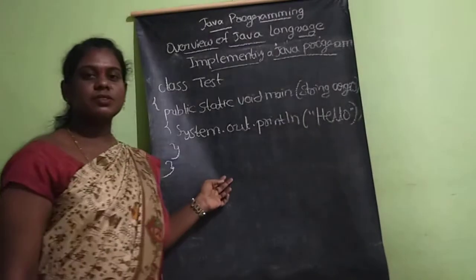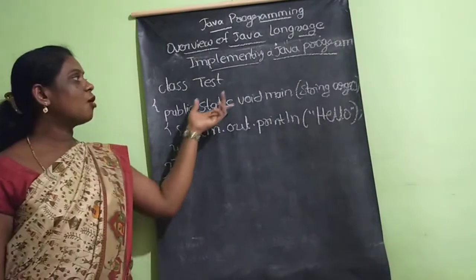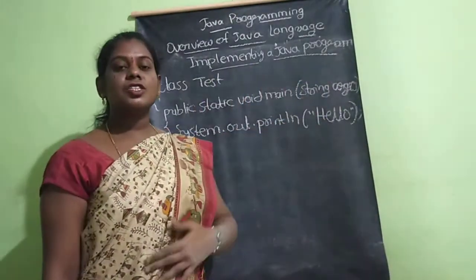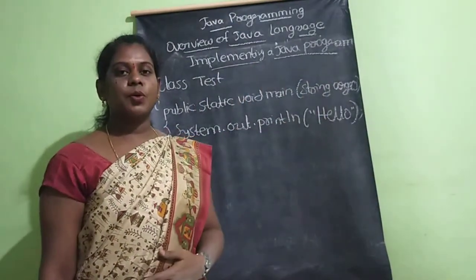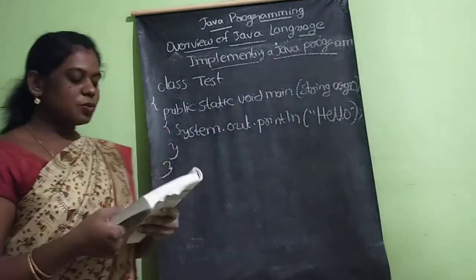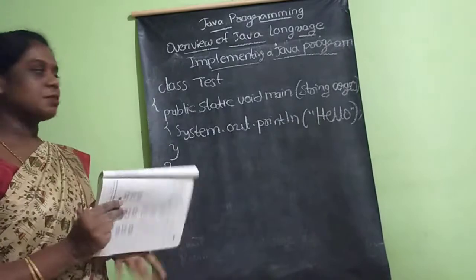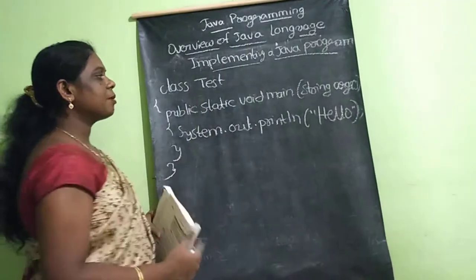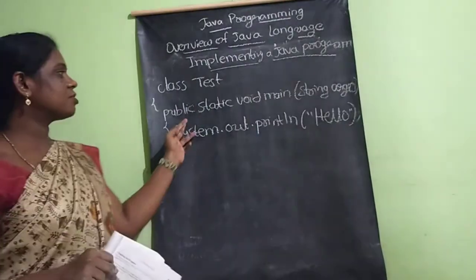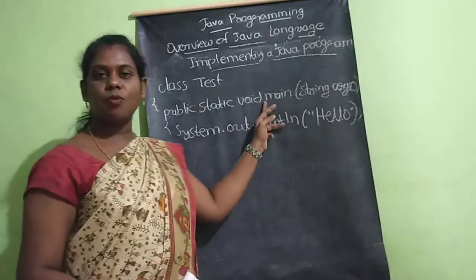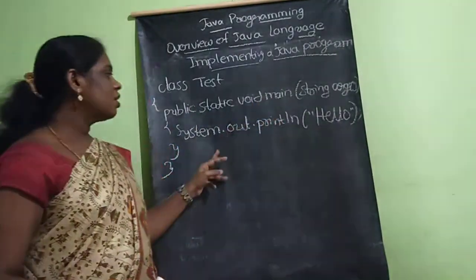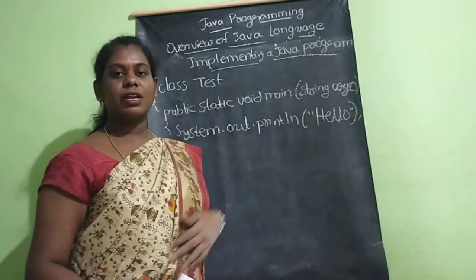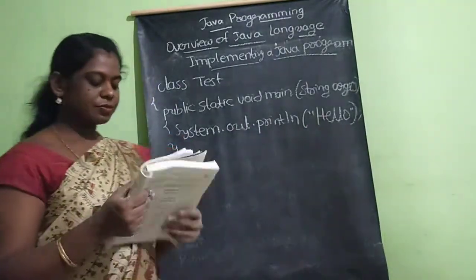Hello, hello students. Today let's see how you are implementing a Java program. So there are three steps. This is a simple Java program — we are declaring the void main method and a print statement that prints 'Hello'.